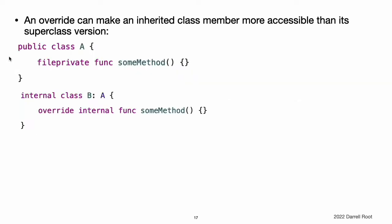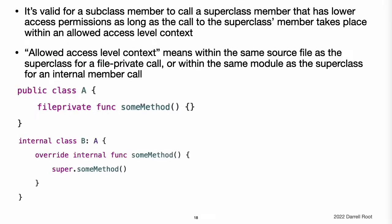An override can make an inherited class member more accessible than its superclass version. In the example here, class A is a public class with a file private method called some method. Class B is a subclass of A with a reduced access level of internal. Nonetheless, class B provides an override of some method with an access level of internal, which is higher than the original implementation of some method. It is even valid for a subclass member to call a superclass member that has lower access permissions than the subclass member, as long as the call to the superclass's member takes place within an allowed access level context — that is, within the same source file as the superclass for a file private member call, or within the same module as the superclass for an internal member call. Because superclass A and subclass B are defined in the same source file, it is valid for the B implementation of some method to call super.some method.